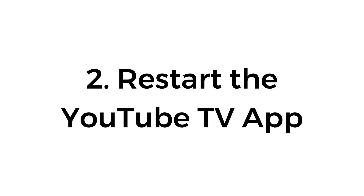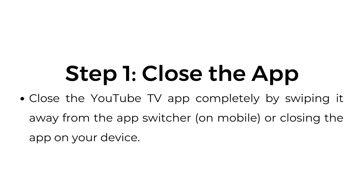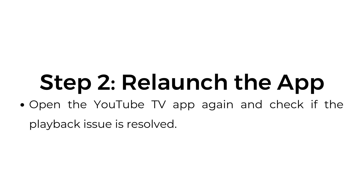Number two: restart the YouTube TV app. Sometimes restarting the app can fix minor issues or glitches. Close the YouTube TV app completely by swiping it away from the app switcher on mobile, or closing the app on your device. Then open the YouTube TV app again and check if the playback issue is resolved.